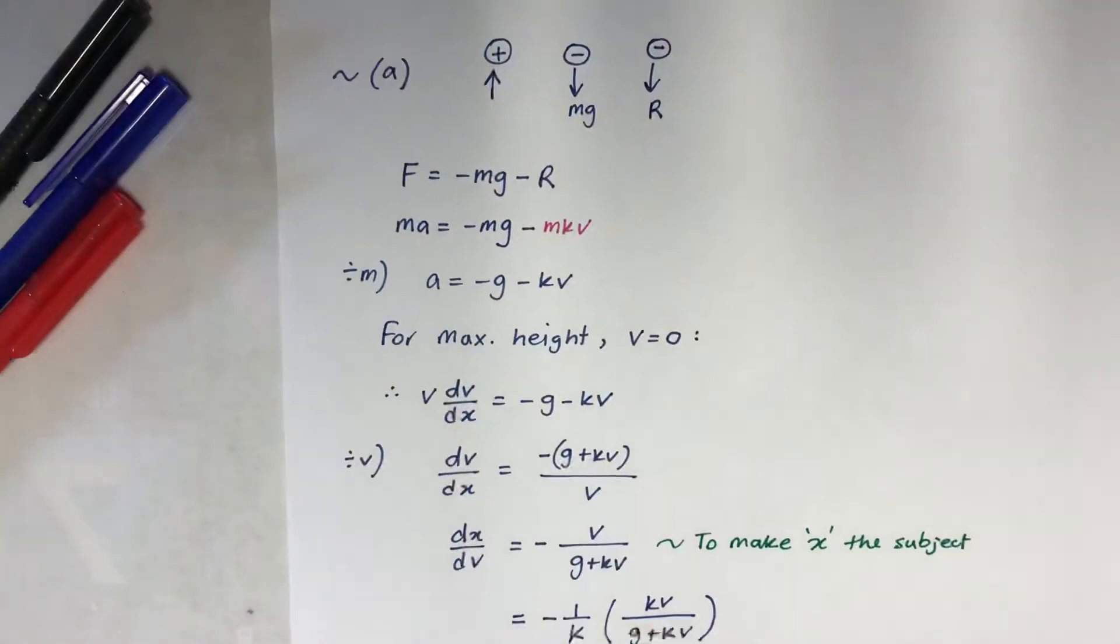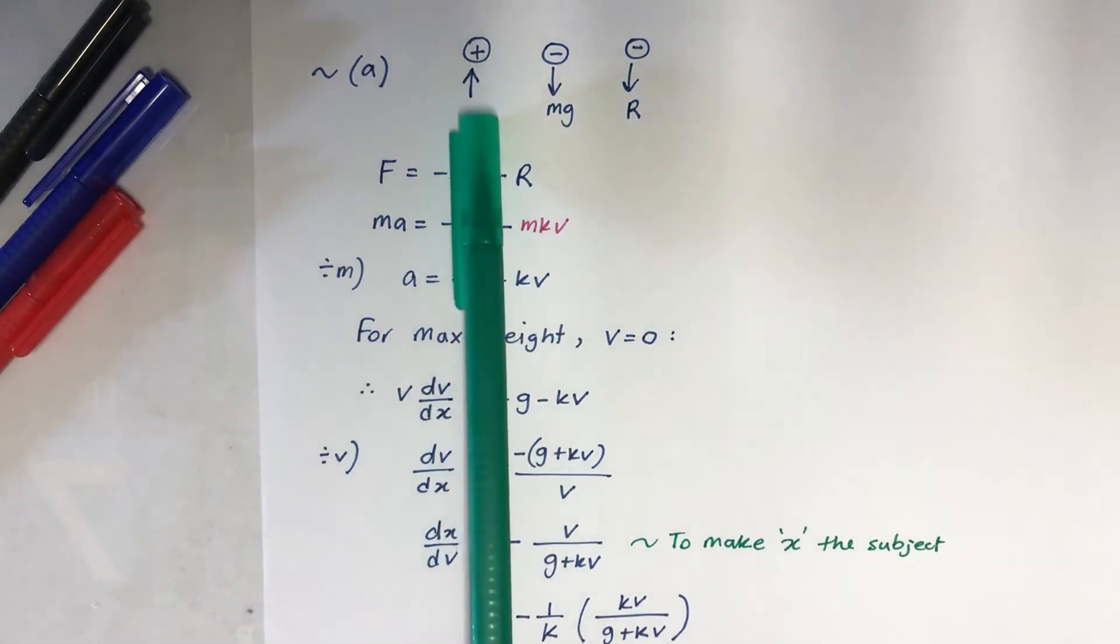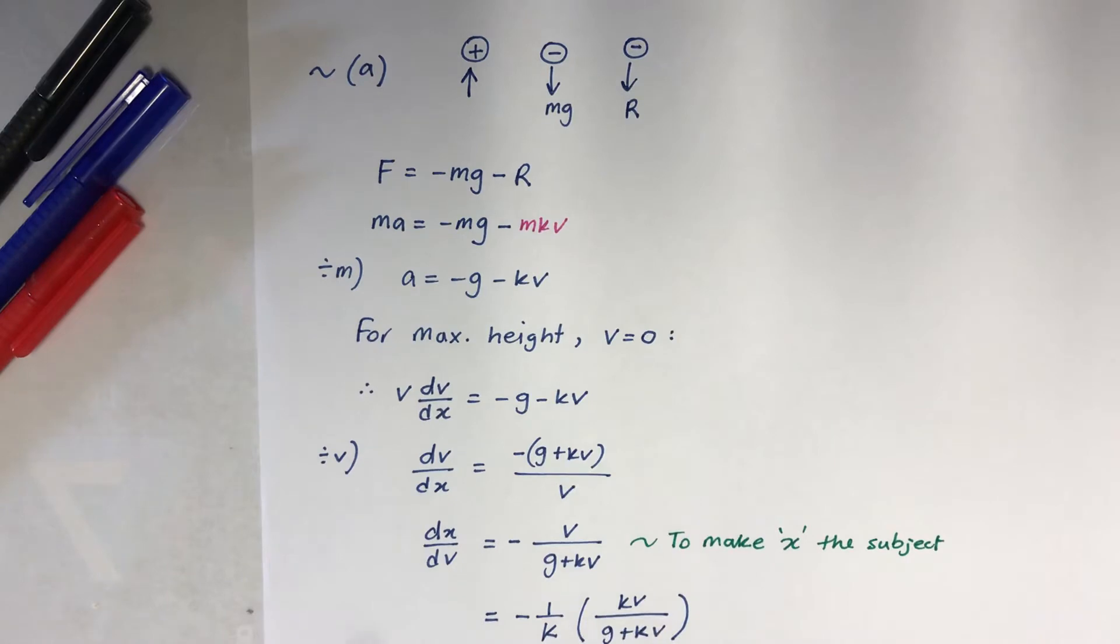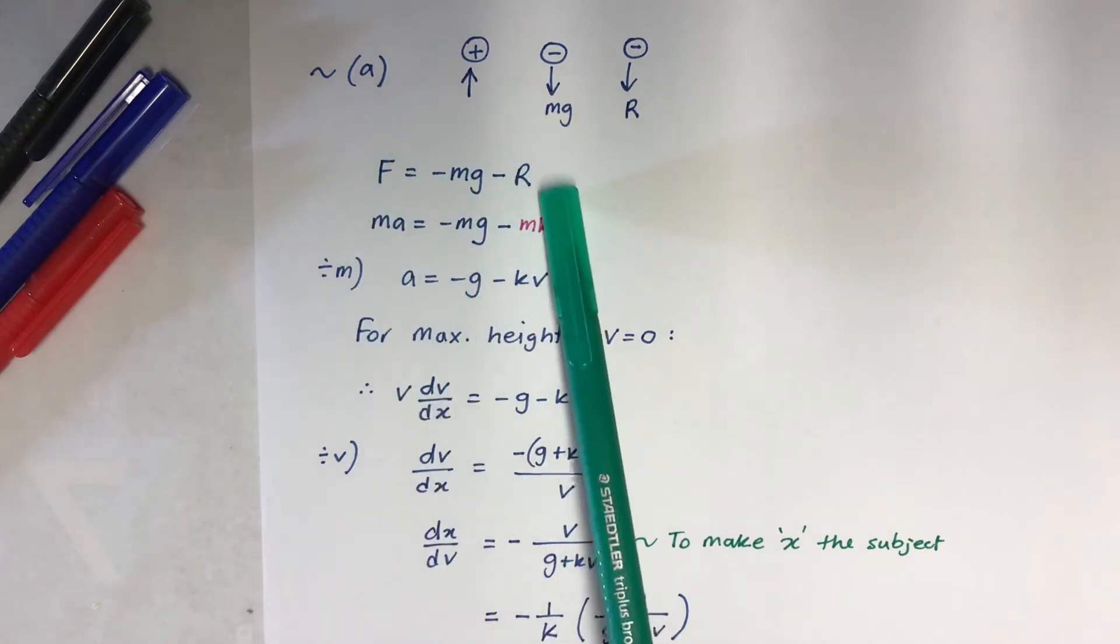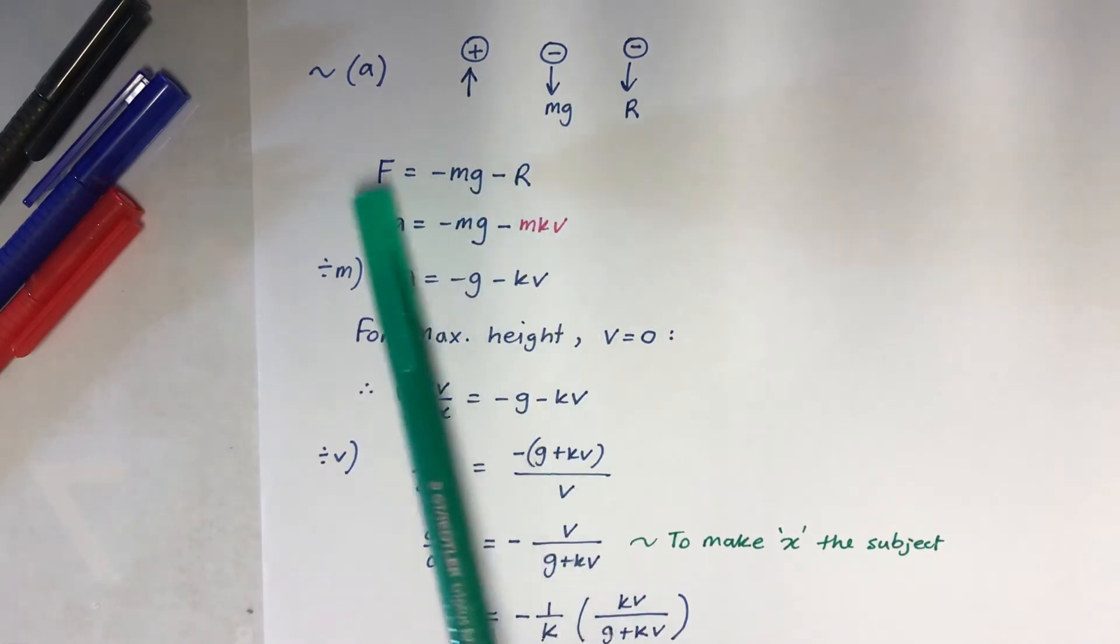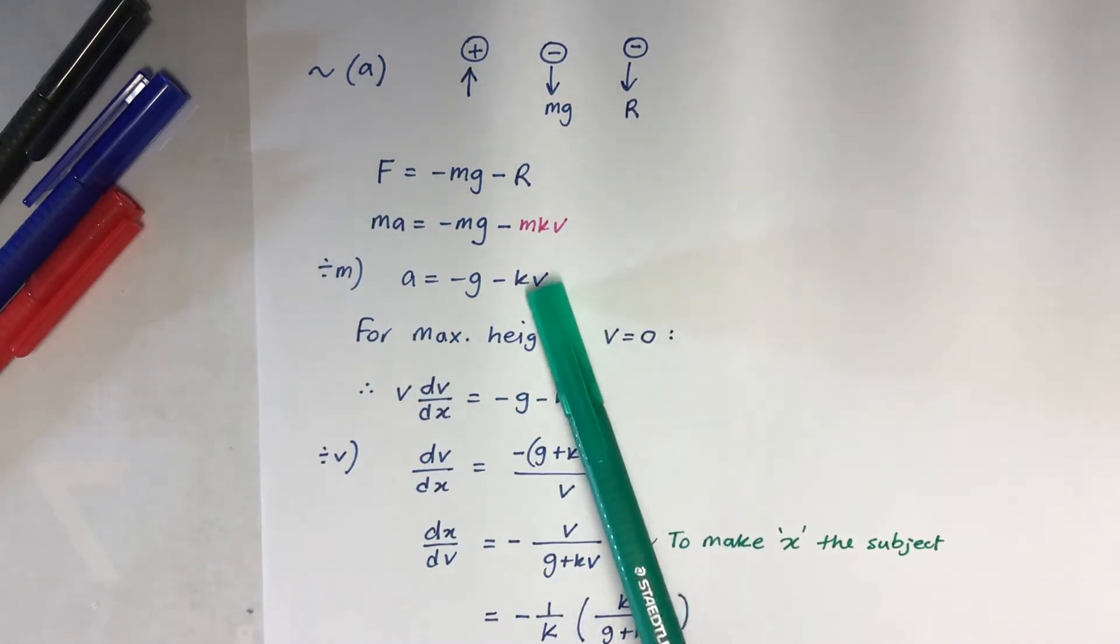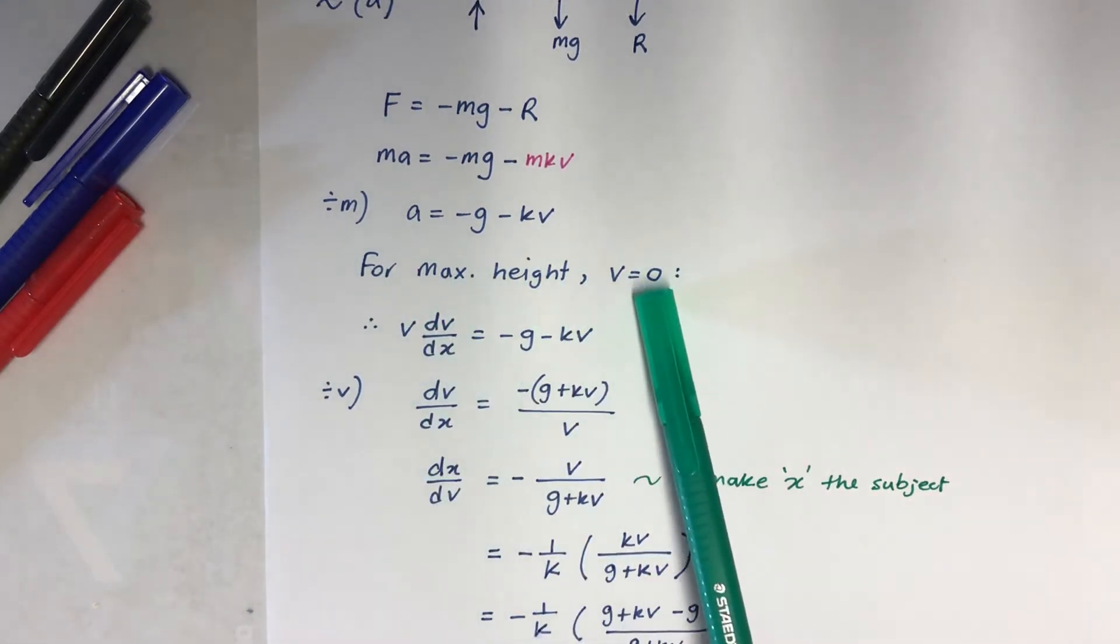So let's have a look at part A. We know it's going vertically upwards, so going up is positive. Obviously MG is negative and the resistance force is negative, so F equals minus MG minus R. You don't really need to write this anymore, but if you want to make sure that you're on the right direction, you can start with that. And then of course after that, MA equals minus MG minus R, which was MKV. Divide by that, you will get that. And when you get used to it, I think you can go straight into that if you're confident.